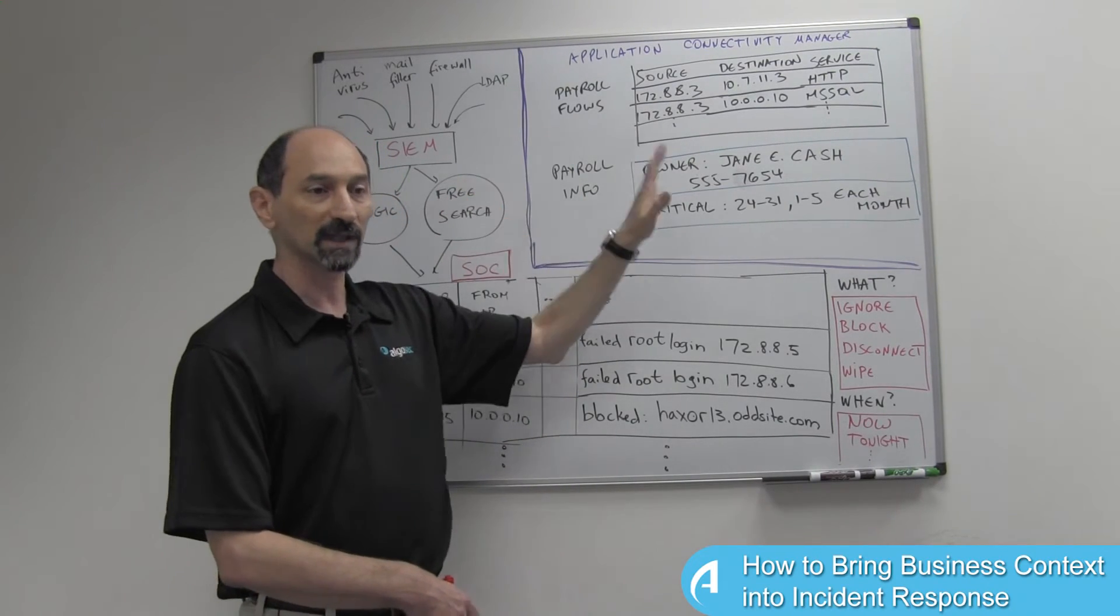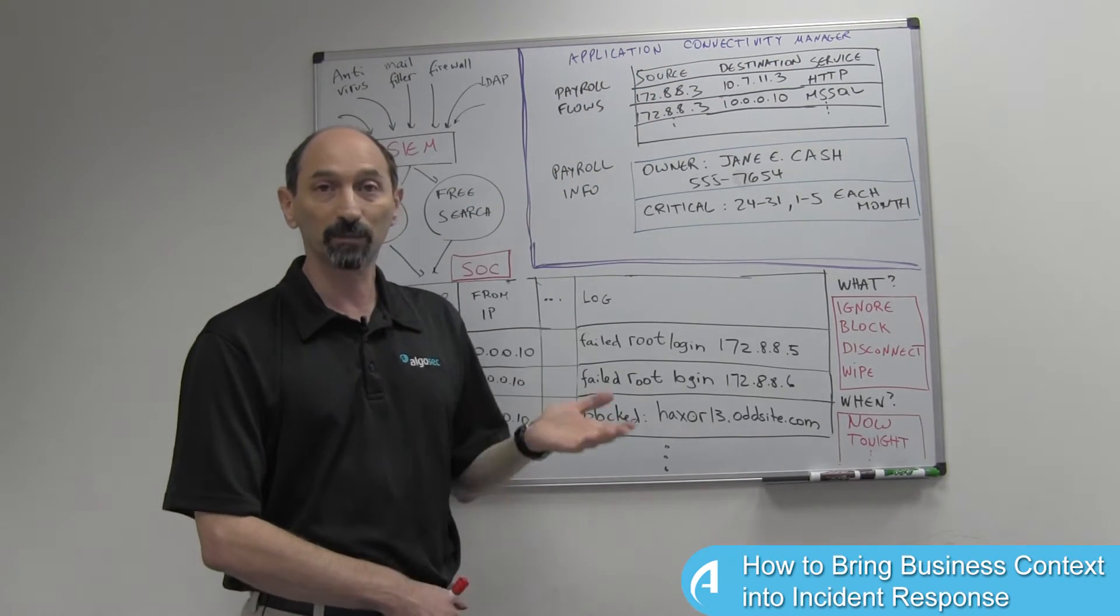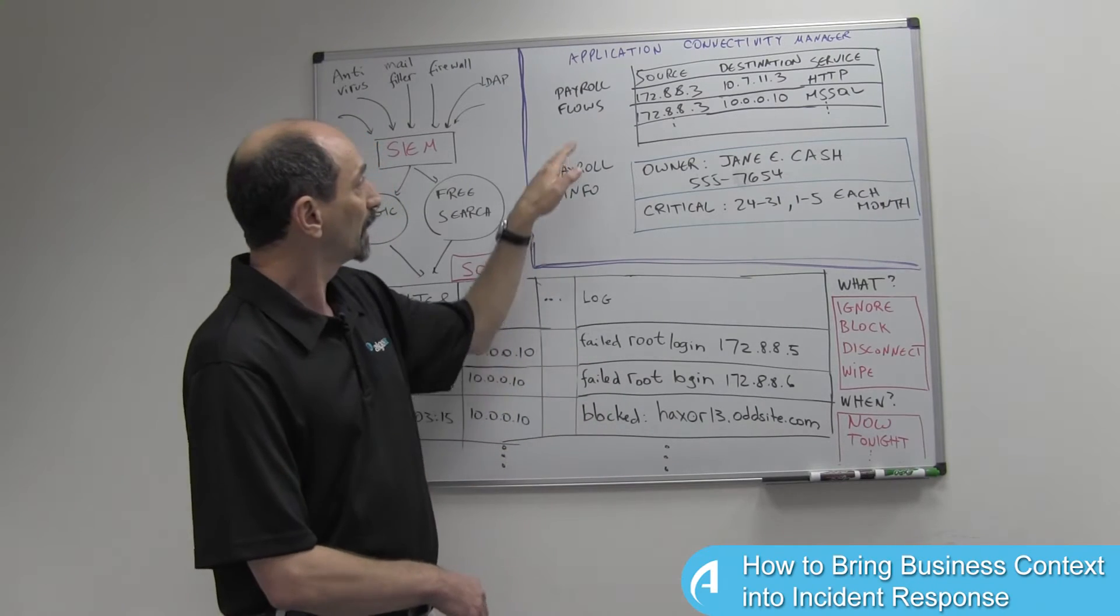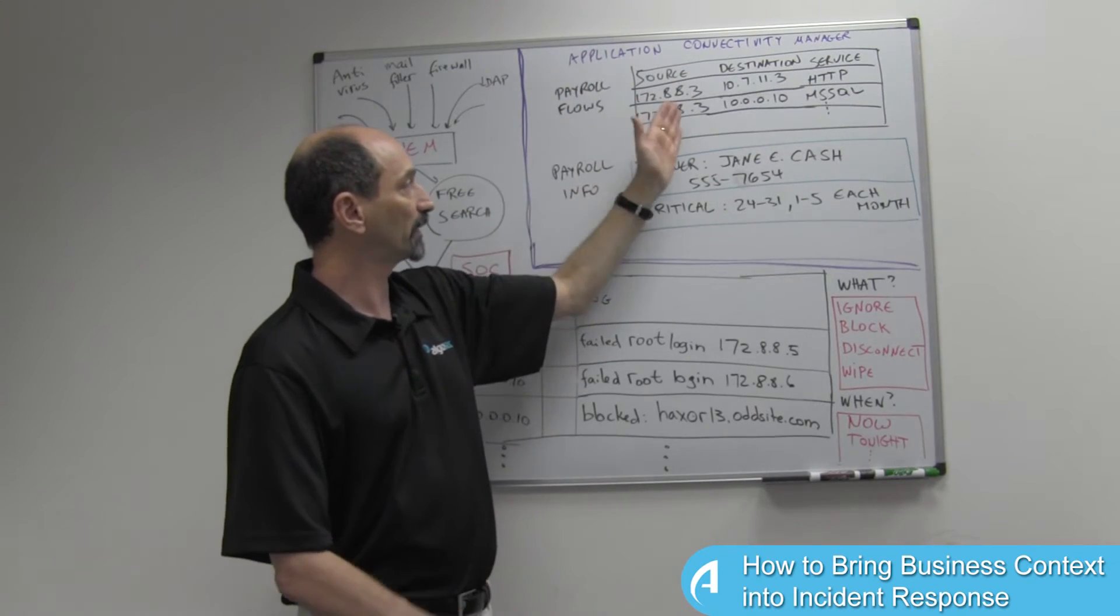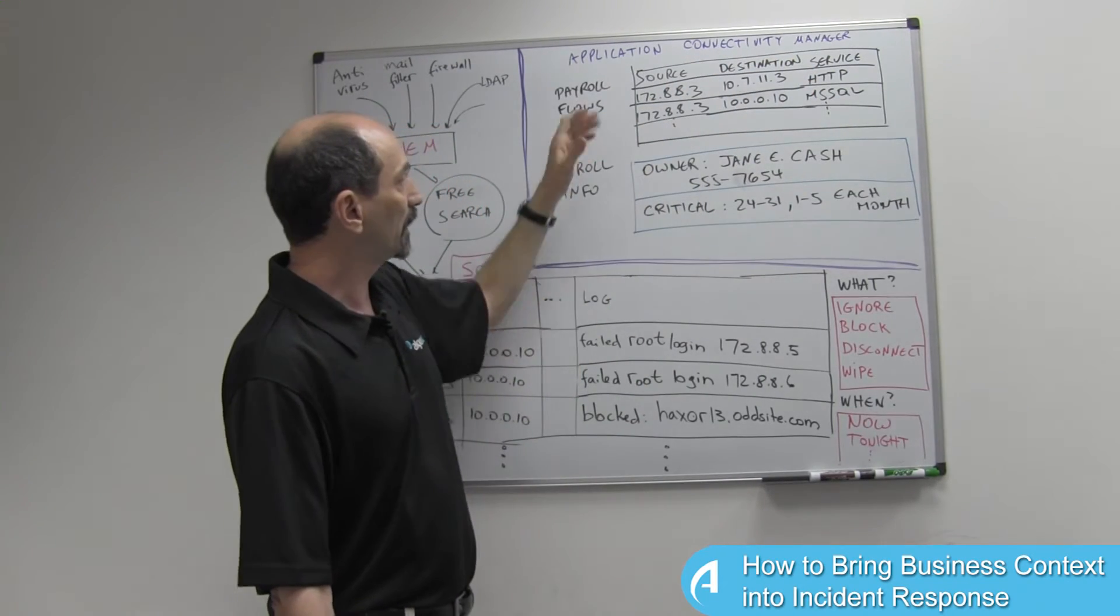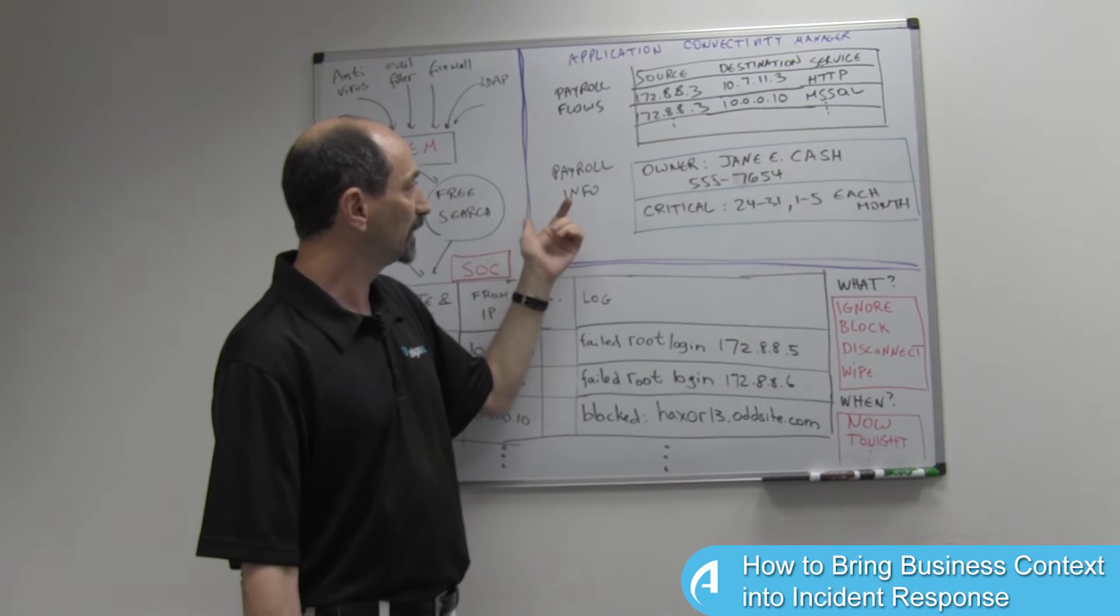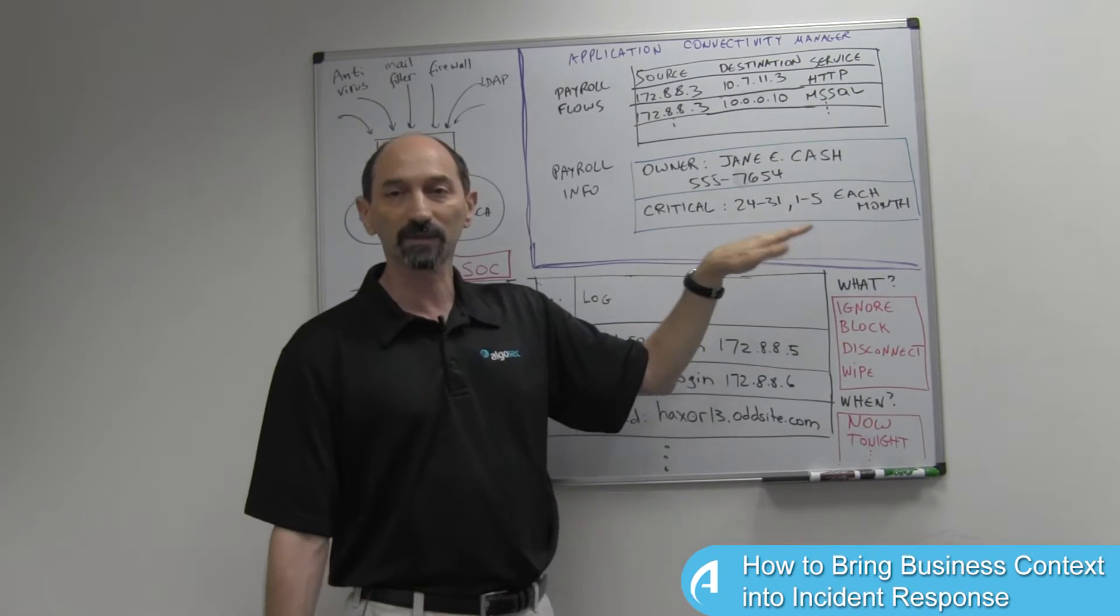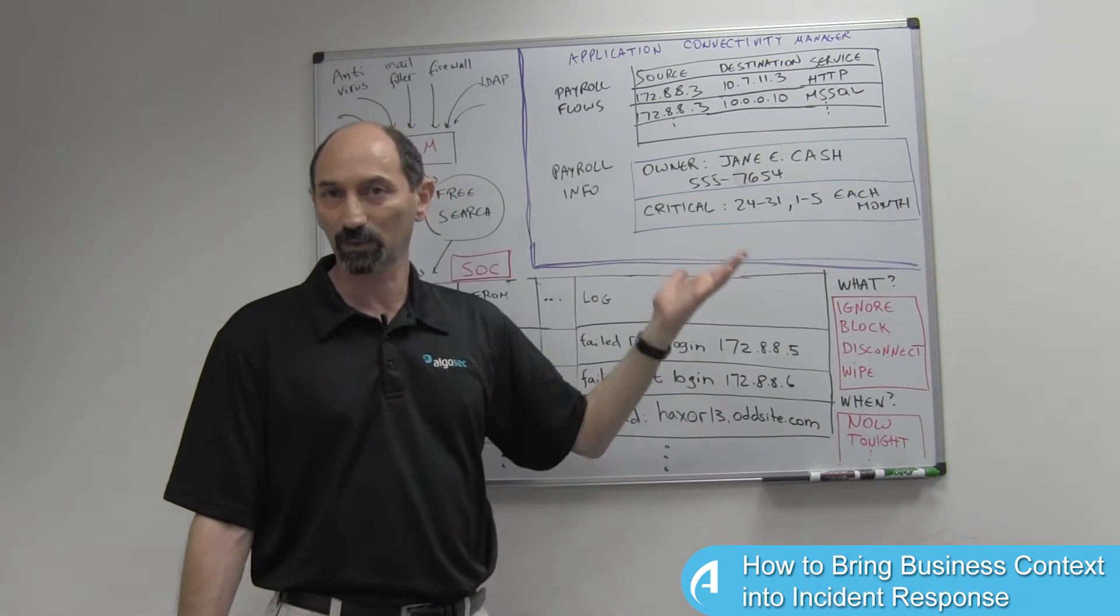If we look at what's going on outside of the SOC in different areas, we can see that most organizations have an application connectivity manager. This is a repository where every business application and business process that's owned by the organization is documented. For instance, the payroll application appears in the connectivity manager, and the payroll application relies on various connectivity from some servers to some other servers using a variety of services. There is a documentation of the connectivity, but associated with that information is also metadata identifying the owner of this payroll application and critical times of the month in which the system is really busy, typically at the end of the month or the beginning of the next month because that's when payroll is being cut.